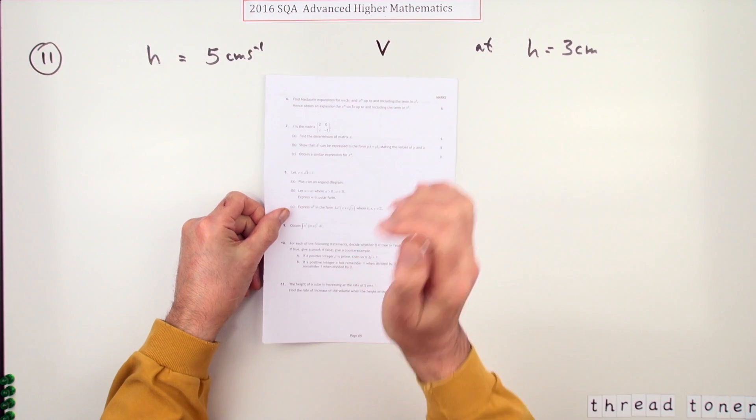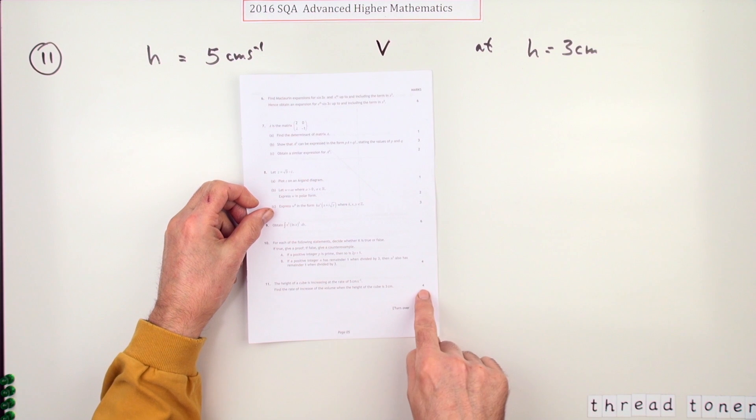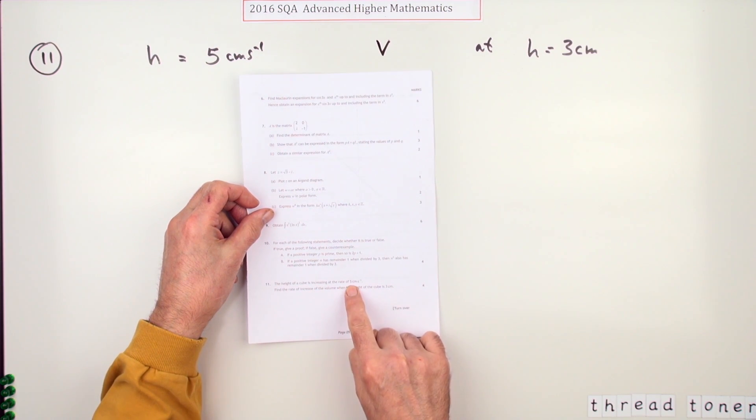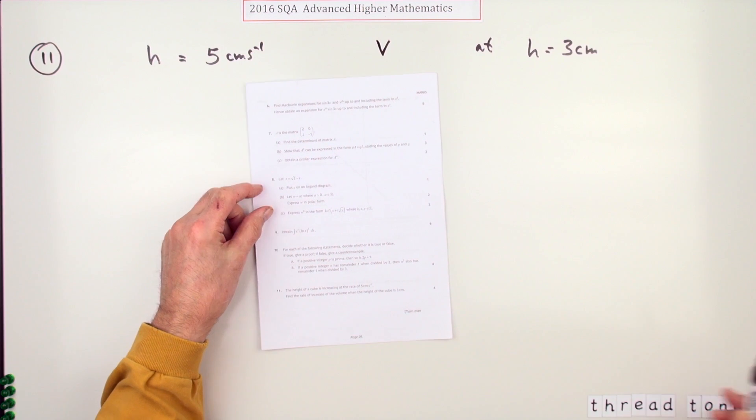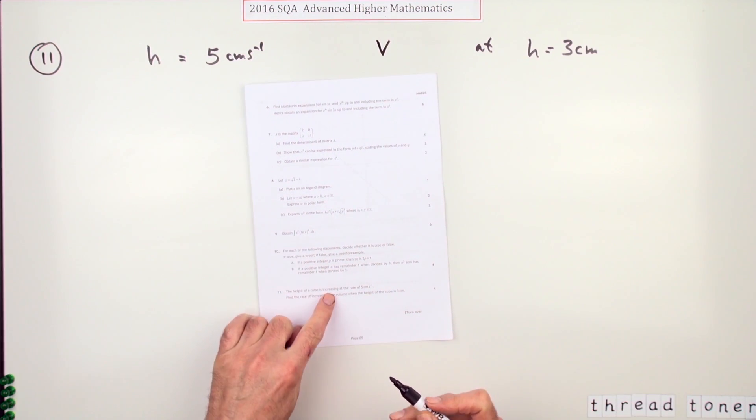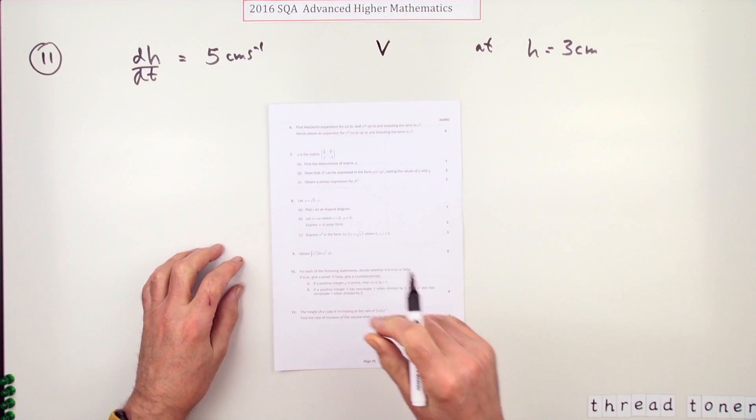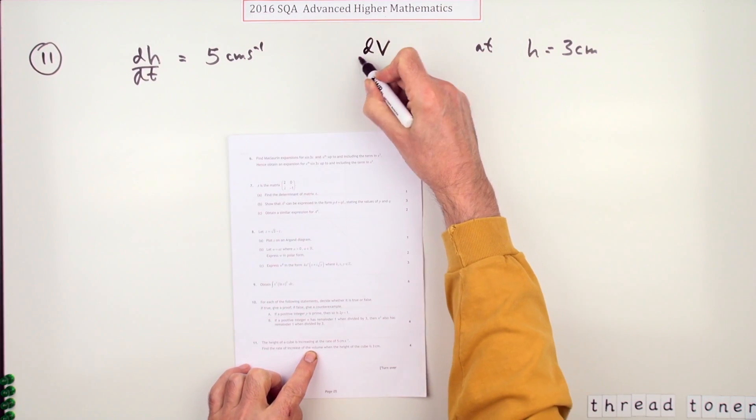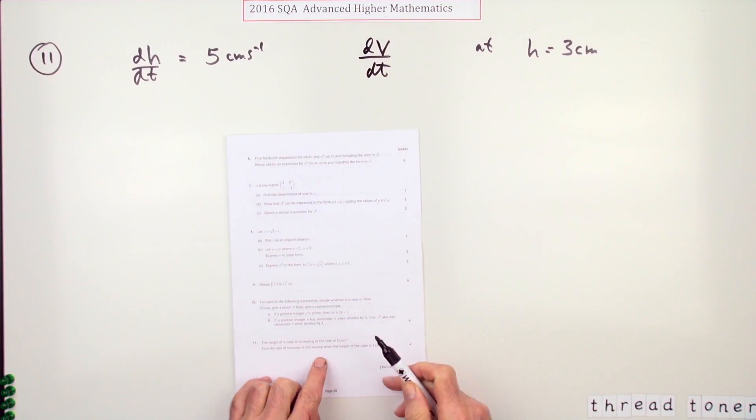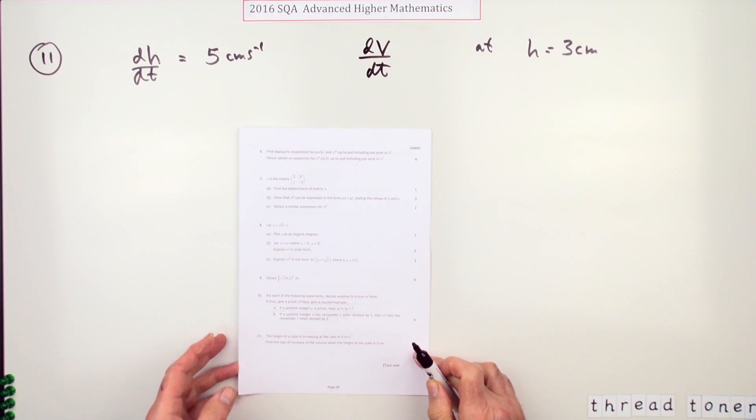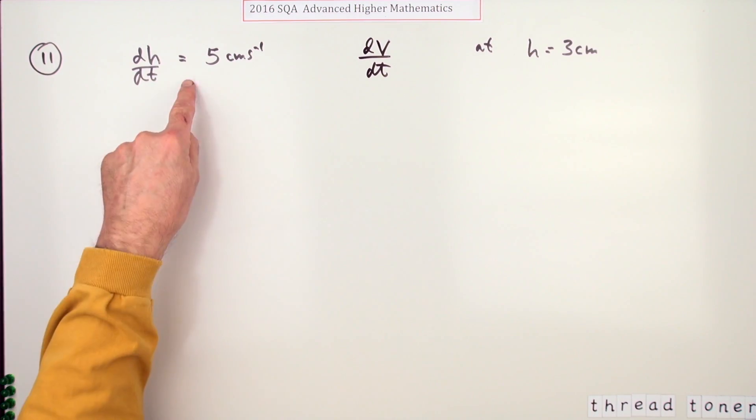Number 11 from the 2016 Advanced Higher Maths, another related rates question. The height of a cube is increasing at the rate of five centimeters per second, so the height is increasing - that'll be the rate of change of the height. Find the rate of increase of the volume, so you want dV/dt at the point at which the height of the cube is at three centimeters. Well, in fact, writing this down gets you the first mark.